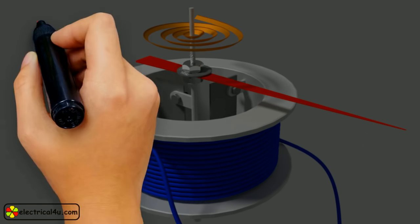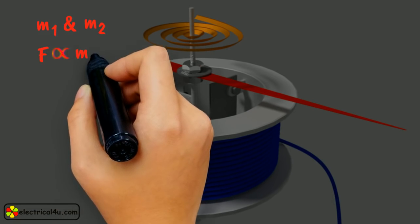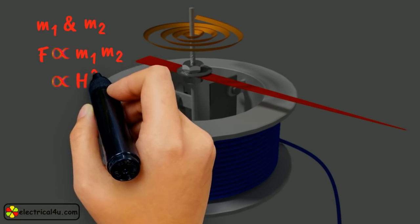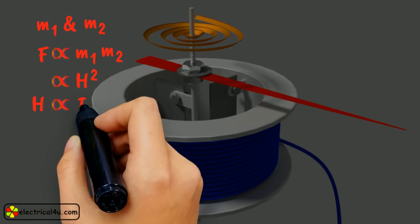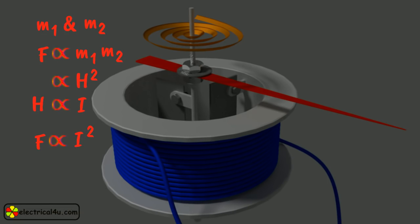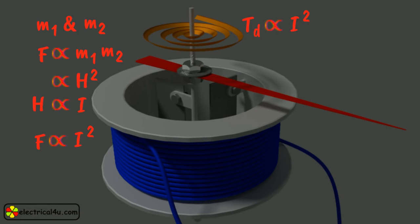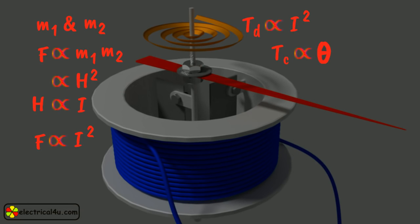If these two iron pieces develop pole strength of M1 and M2 respectively, then instantaneous deflecting torque F is proportional to M1 into M2, which again is proportional to H square, where H is the field strength. If the permeability of iron is assumed constant, then H proportional to I, where I is a coil current. The instantaneous deflecting torque F is being proportional I square. Average deflecting torque T suffix D proportional to mean of I square over a cycle. Since the instrument is spring controlled, T suffix C is proportional to theta, where theta is the angle of deflection of the moving piece.